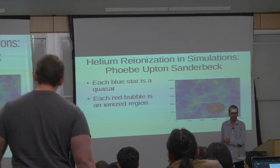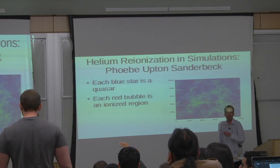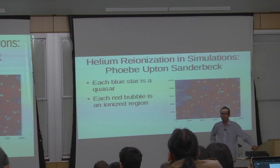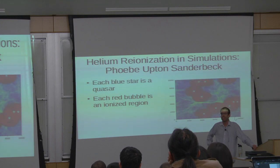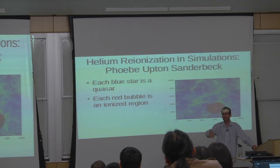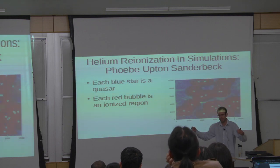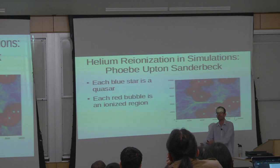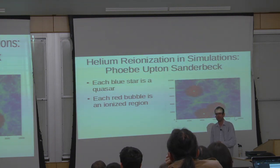Question: how do you know the black hole population? The simulation has a model for black holes already. Every time you get a galactic halo of about the right mass, you place a black hole in the middle and follow its accretion and growth through mergers numerically in the simulation. So we're just piggybacking onto existing work.